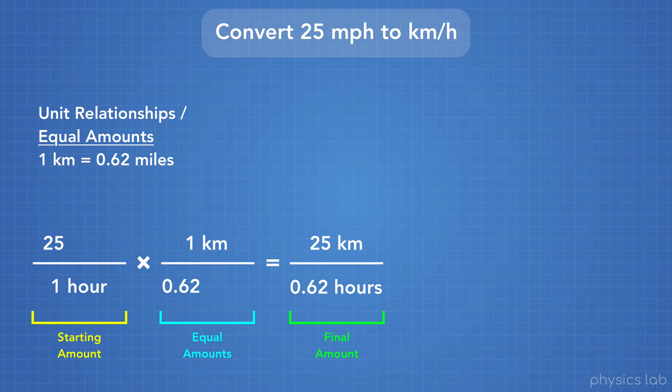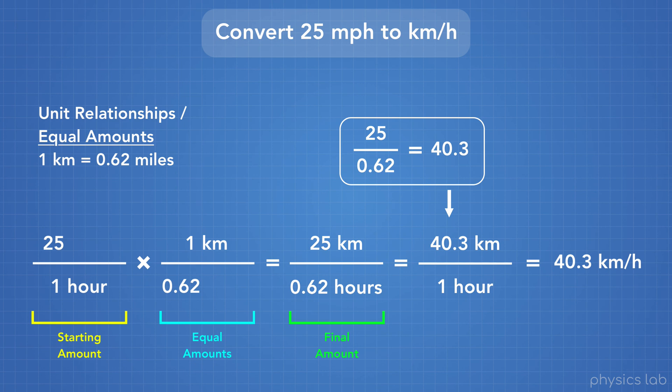So we end up with 25 miles per hour is equal to 25 kilometers divided by 0.62 hours, which is true. But what we really want is kilometers per one hour. So to do that, we just finish the math. We'll do 25 divided by 0.62, and we get 40.3. So we write that on top. So our final answer is 40.3 kilometers per hour.